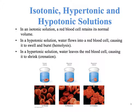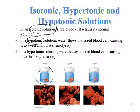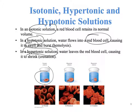In an isotonic solution, the red blood cells remain normal. When we have a hypotonic solution, water flows into the red blood cell, causing it to swell. If we have a hypertonic solution, water is going to leave the red blood cells, causing them to shrink.